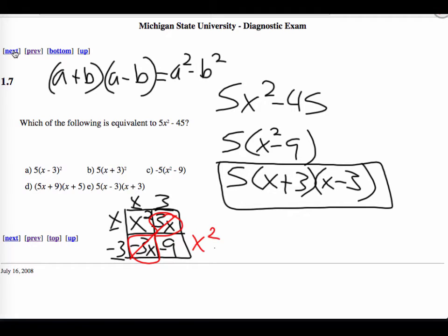When you have 3x and you take away 3x, those cancel. And I'm left with x squared minus 9, which shows that that is the prime factorization. And then if you multiply it by 5, you get the original term that we started with. So E gets the solution on that one.